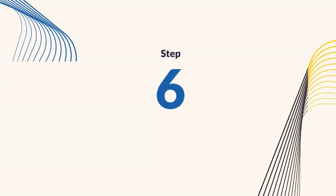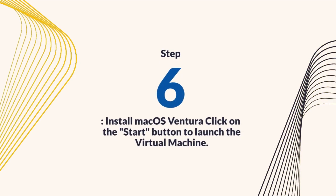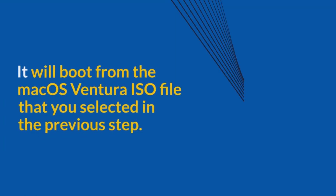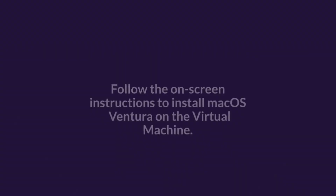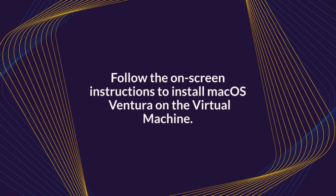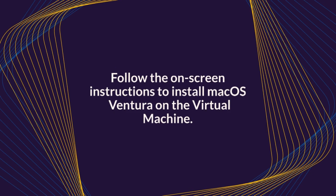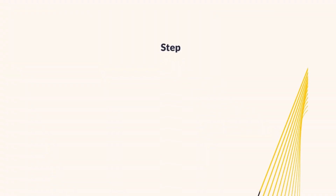Step 6: Install macOS Ventura. Click on the Start button to launch the virtual machine. It will boot from the macOS Ventura ISO file that you selected in the previous step. Follow the on-screen instructions to install macOS Ventura on the virtual machine.